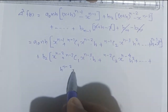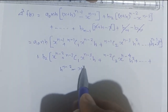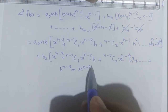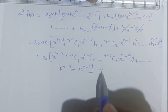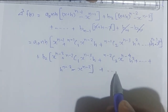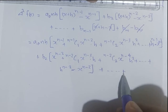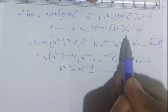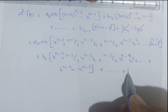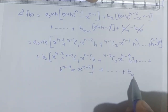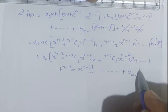What remains after cancellation is the expansion of (x+h)^(n-1) - x^(n-1), giving terms in x^(n-2) and lower, plus the last term b(m-1)·h.